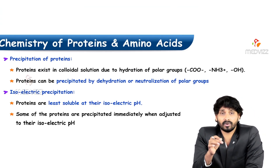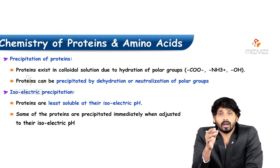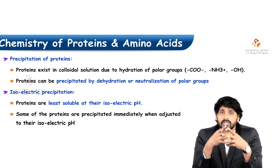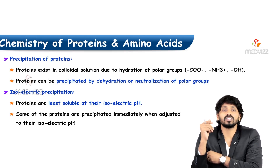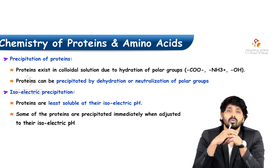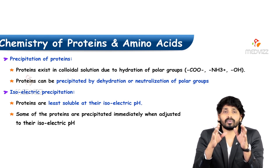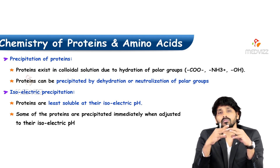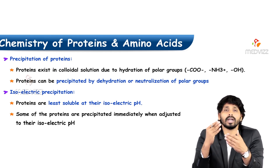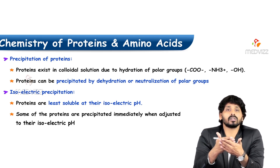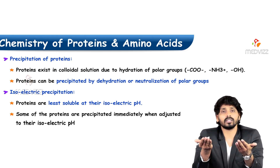The best example I can give for that is curd. Curd comes from milk. Milk contains a protein called casein. Overnight, in the presence of bacteria — lactobacillus — the lactobacillus produces acids, creating an acidic environment. At that acidic environment, this casein gets precipitated, which we are calling as curd.